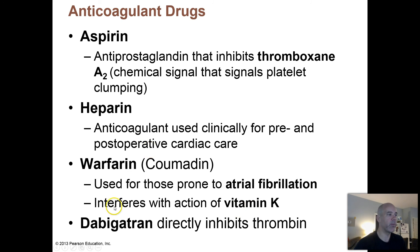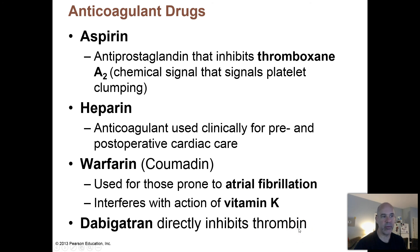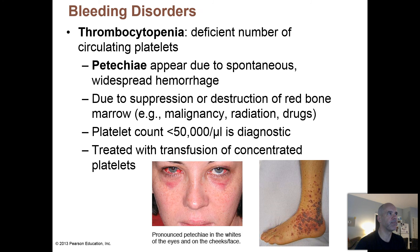Another drug that can be given is dabigatran, which directly inhibits thrombin. Thrombin is the enzyme that takes fibrinogen and converts it to fibrin. If thrombin is not quite as active, you're not going to be able to make clots quite as easily.